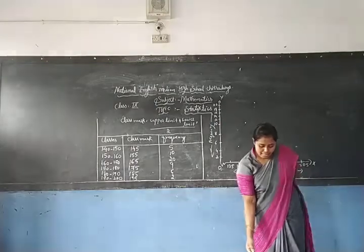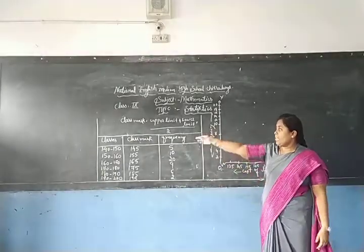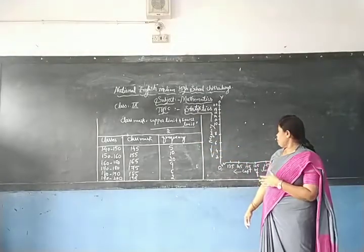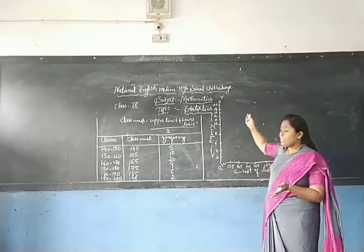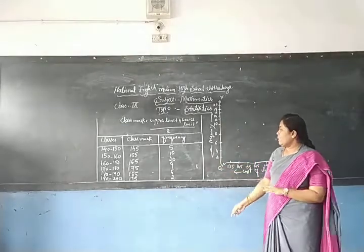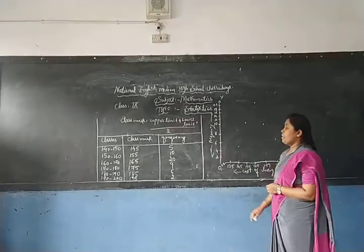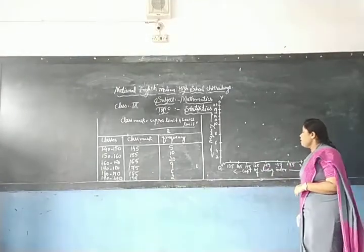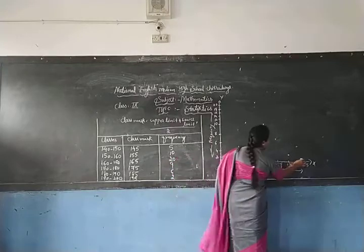We have to extend the frequency polygon to the adjacent class intervals. Before the lowest class interval 140 to 150, we extend to the class mark 135, with frequency zero. Similarly, after the last class mark 195, the next class mark is 205, and we extend the polygon to that point as well.